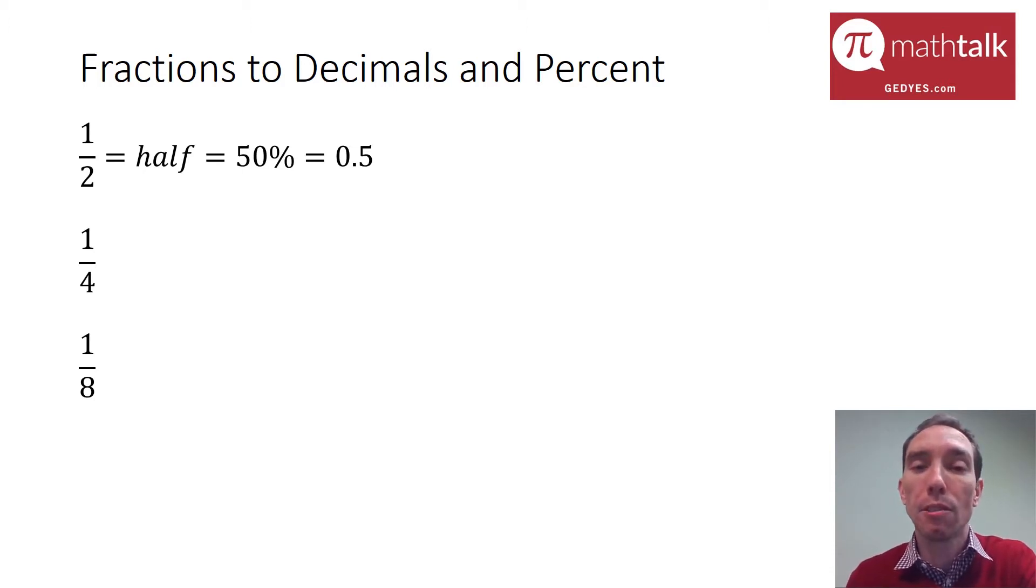The next fraction I have is one-fourth. When I think of a fourth, I really think of a quarter—it's the same thing. When I think of a quarter, I automatically think of 25 cents or 25%. And if I think of 25 cents, I know that I can write that as 0.25, because when you write it as a dollar amount, it's 0.25.